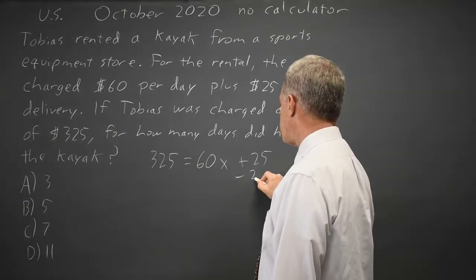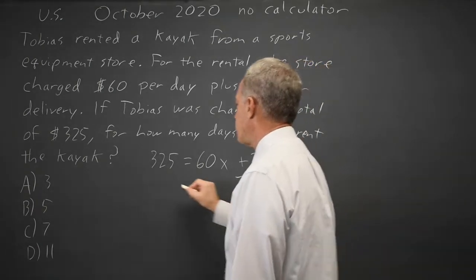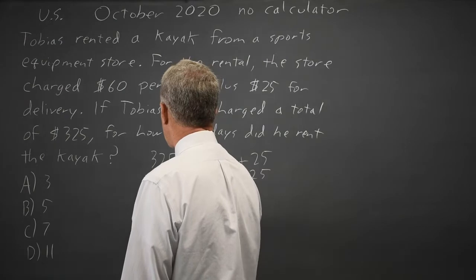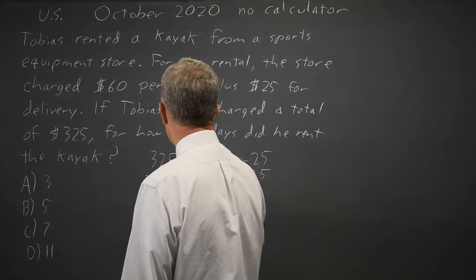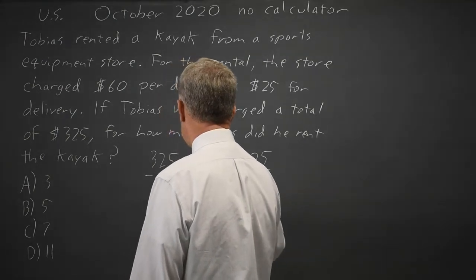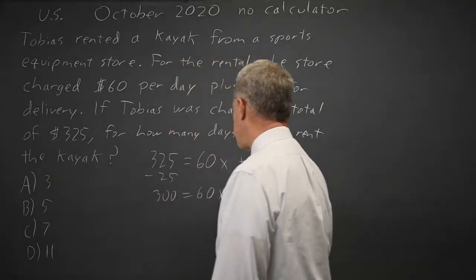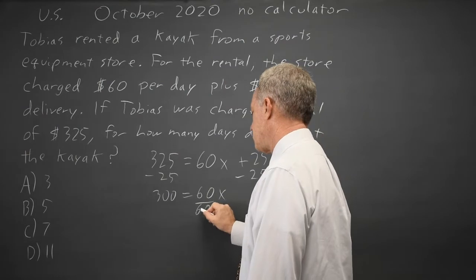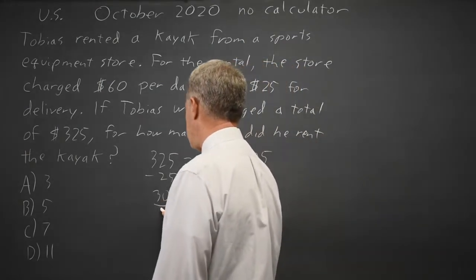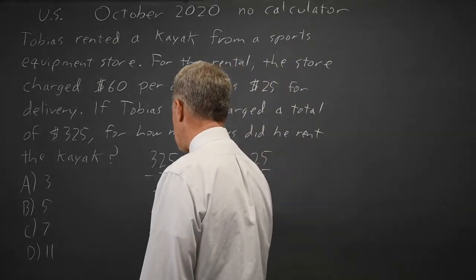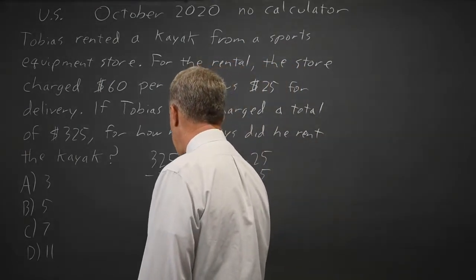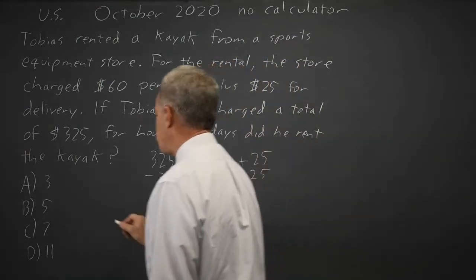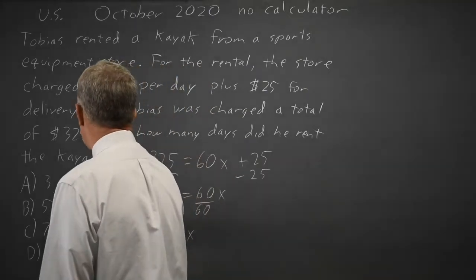If I collect like terms and subtract 25 from both sides, I get 300 equals 60 times the number of days. Divide both sides by 60, and x equals 5, which is choice B.